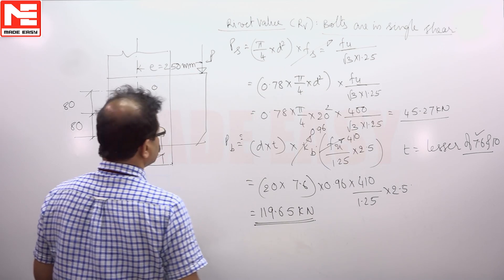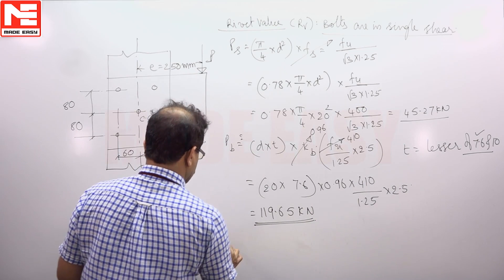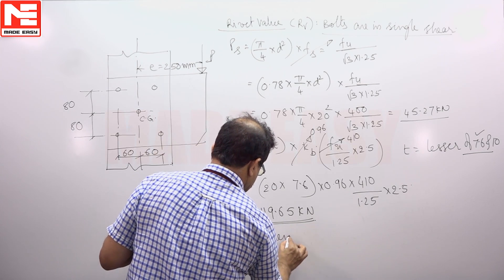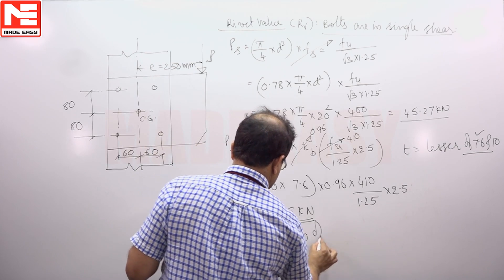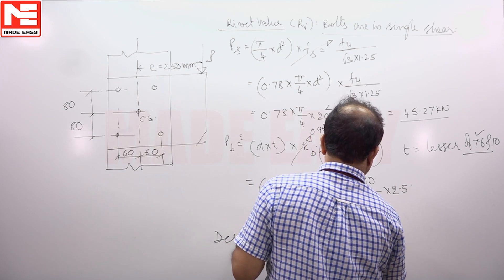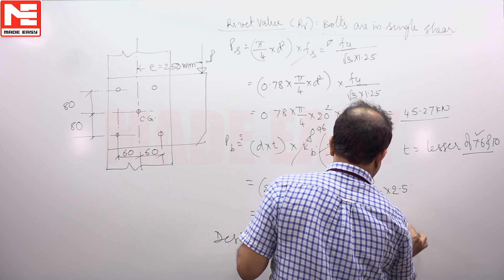So the design strength of the bolt we will take as 45.27 kN.